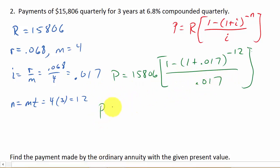Alright, so now let's punch this into our calculator. So I get P is equal to... So once again, let's just put the numerator in. So that's going to be 1 minus, open parentheses, 1 plus 0.017, close parentheses, raised to the negative 12. And hit equals. And then divided by 0.017 equals.